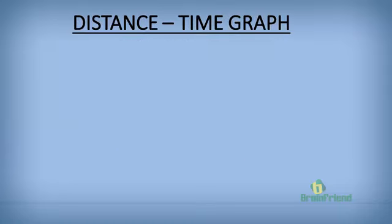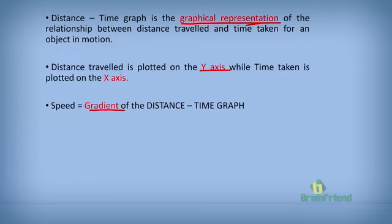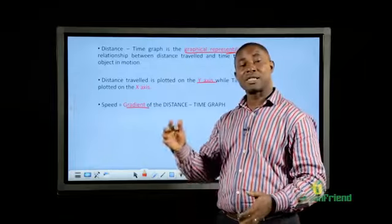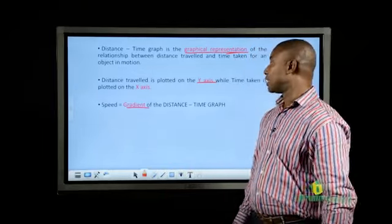Let's now look at the distance-time graph. A distance-time graph is a graphical representation of the relationship between distance traveled and time taken. Distance is plotted on the y-axis and time on the x-axis. Speed can be obtained from the distance-time graph by finding the gradient or slope of the graph.